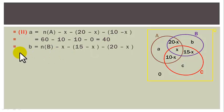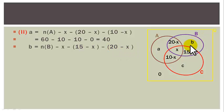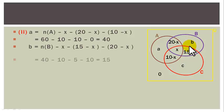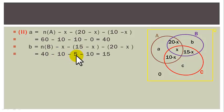Small b = |B| − x − (15−x) − (20−x) = 40 − 10 − 5 − 10 = 15.